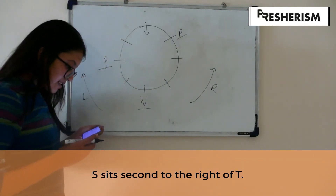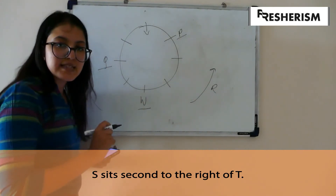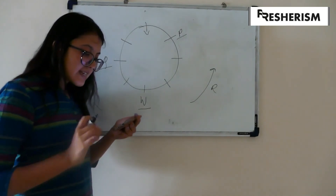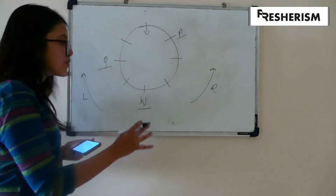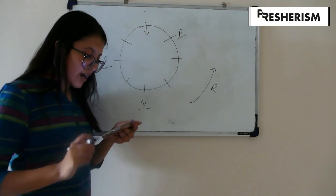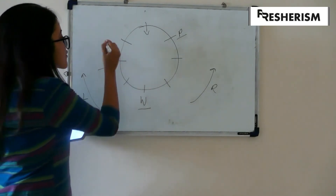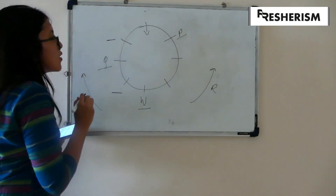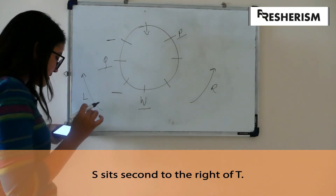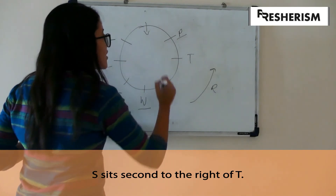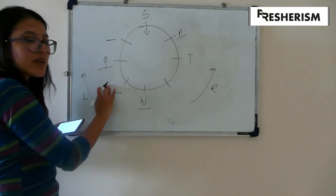The condition further tells us that S sits second to the right of T, but we don't have T or S placed yet, so we leave this condition for now. V sits second to the left of R — again, no specified position for V or R, so moving on. T is not the neighbor of Q. Neighbors of Q would be this or this, therefore T cannot be here, neither can T be here. So if T sits over here, S will sit second to the right — because T won't sit near Q since it cannot be a neighbor of Q.